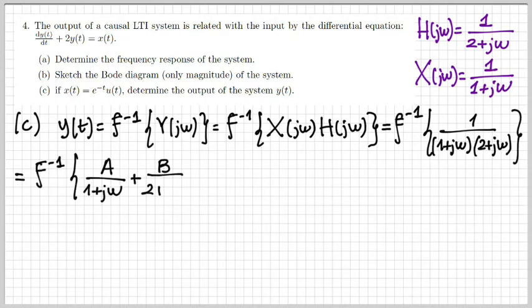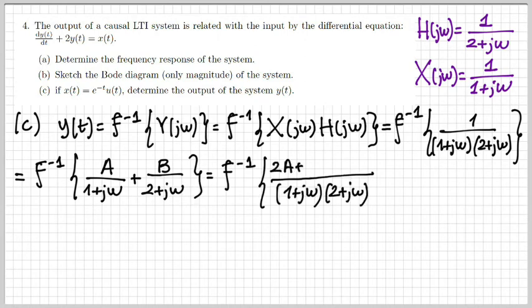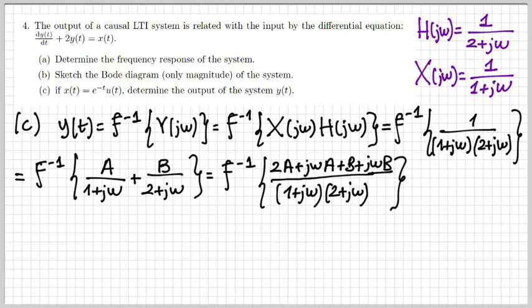To compute the inverse transform, if we can write the Fourier transform as a sum of different terms, we can exploit linearity to calculate simpler inverse transform terms and then sum them up. So we perform a partial fraction expansion, with two coefficients A and B to be determined. We write it as the inverse transform of A/(1 + jω) plus B/(2 + jω). Combining over a common denominator — (1 + jω)(2 + jω) — the numerator becomes A·(2 + jω) + B·(1 + jω).